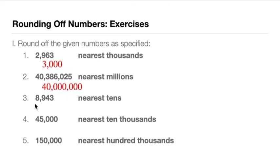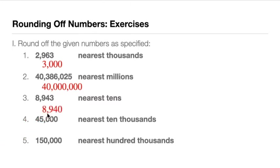Number 3: 8,943 rounded to the nearest tens. The tens digit is 4. To the right of it is the digit 3, which is clearly less than 5. So we round down and retain, and the answer becomes 8,940.